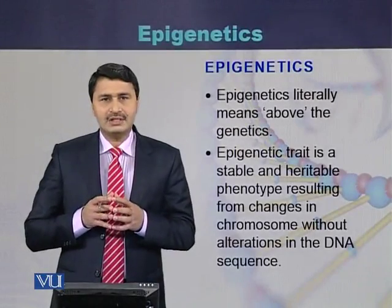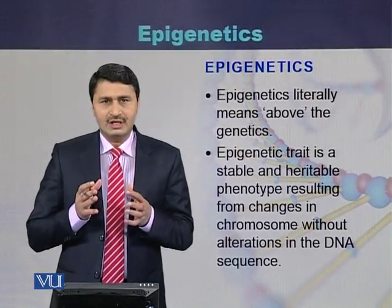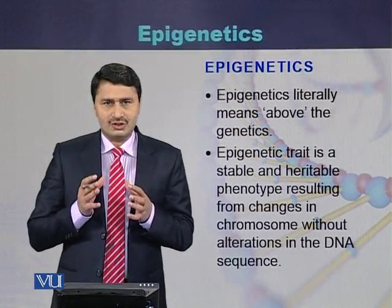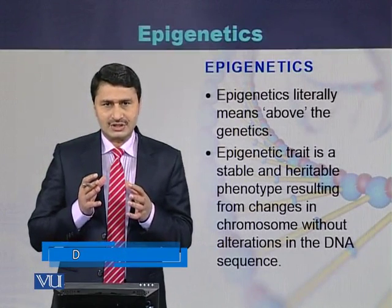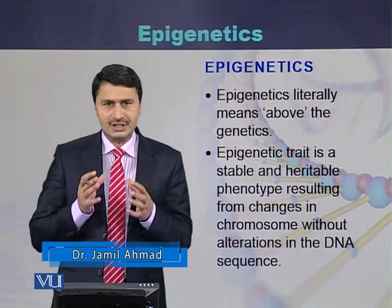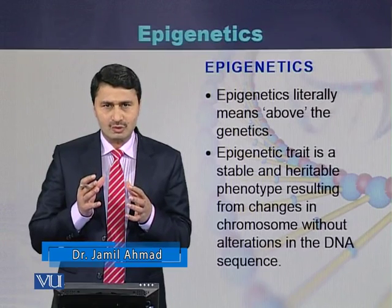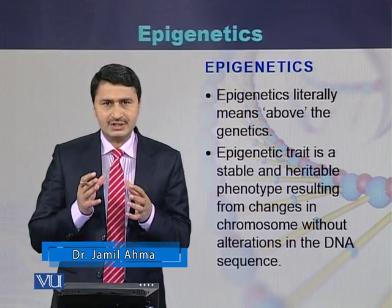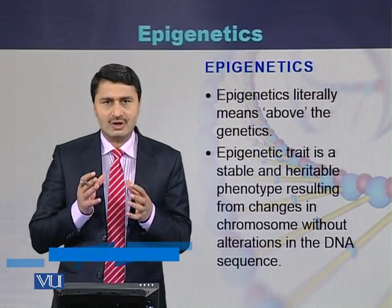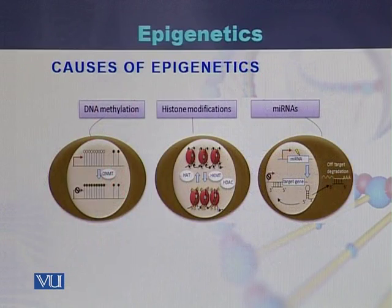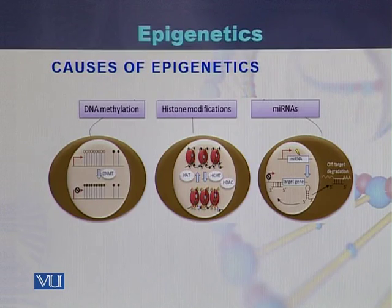Epigenetics literally means 'above the genetics.' Epigenetics are those traits which are due to stable and inherited changes in the chromosomes, but these changes are not in the sequence of the DNA. There are different causes of epigenetics: DNA methylation, histone modifications, and micro RNAs. These are the three important causes of epigenetics.